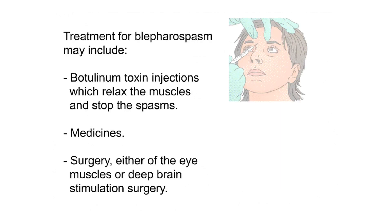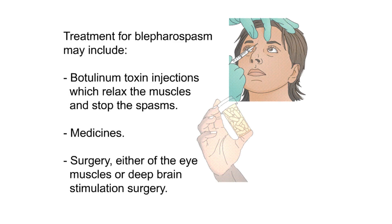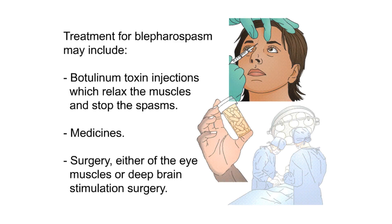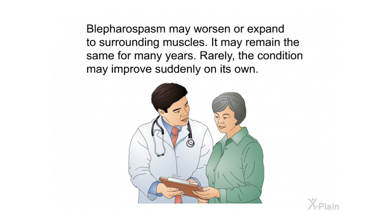Blepharospasm happens in both men and women, but is most common in middle-aged or elderly women. Treatment may include botulinum toxin injections, which relax the muscles and stop the spasms, medicines, surgery of the eye muscles, or deep brain stimulation surgery. Blepharospasm may worsen or expand to surrounding muscles, or remain the same for many years. Rarely, the condition may improve suddenly on its own.